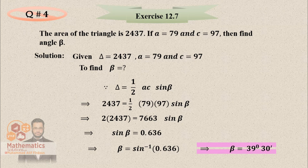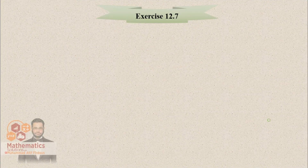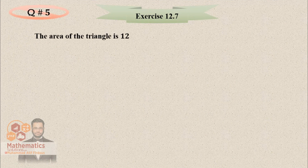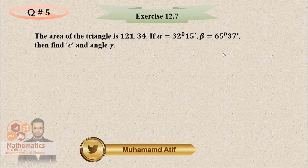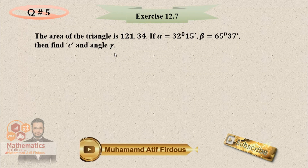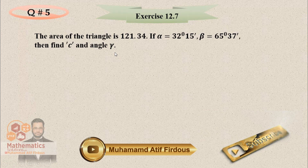This is a simple question. In this case the area was given. A similar type of question may appear in the exam. Next question is number 5. Again the area is given, equal to 121.34; alpha = 32 degrees 15 minutes and beta is also given. This time you have to find side C and angle gamma.